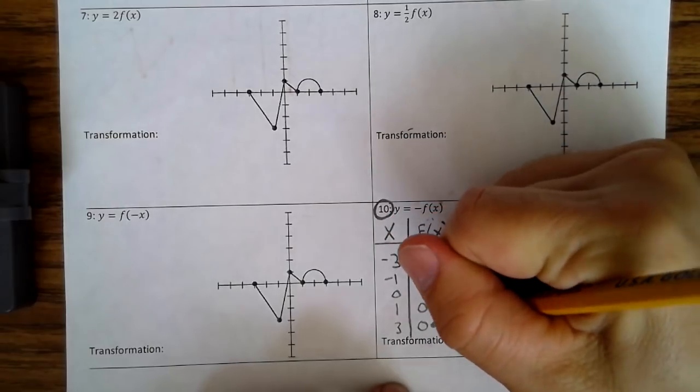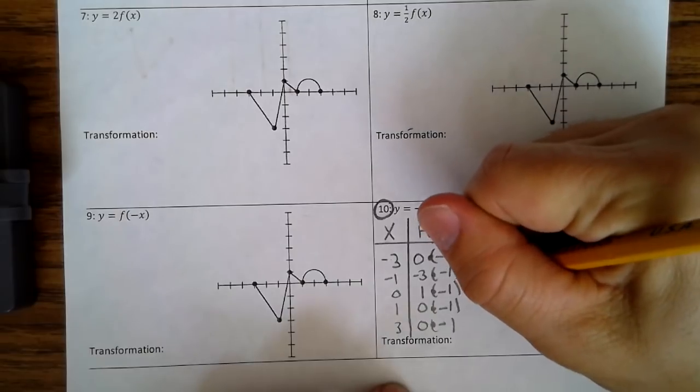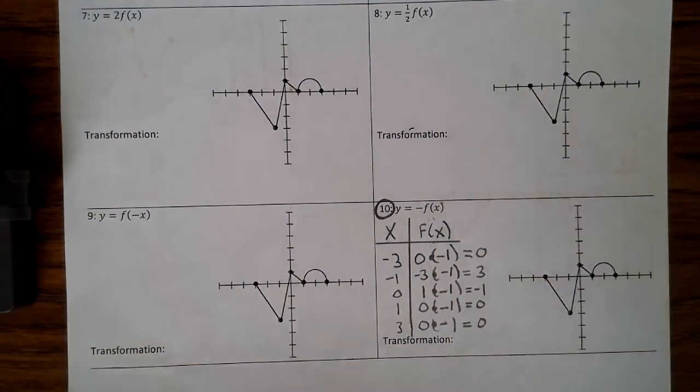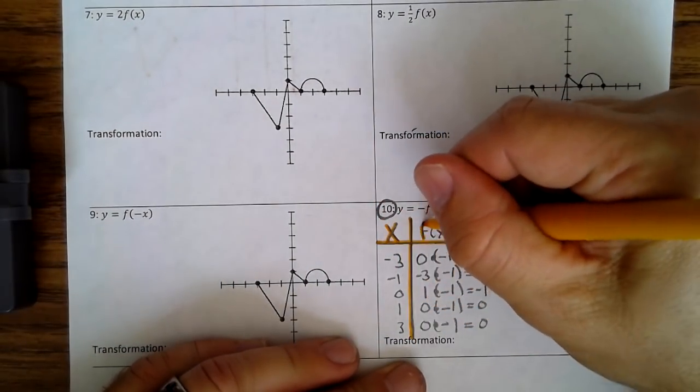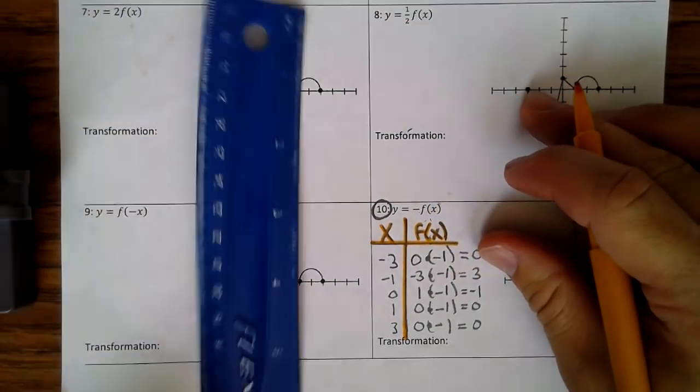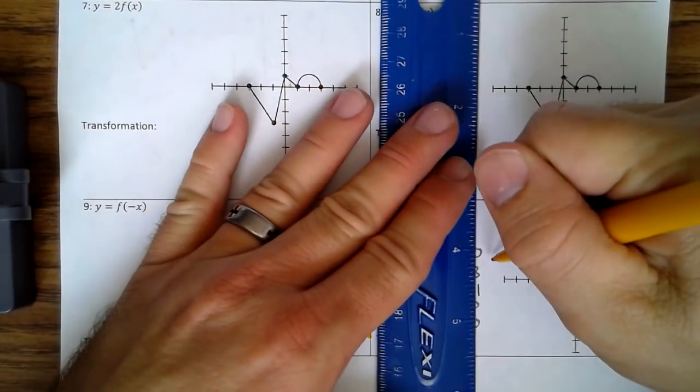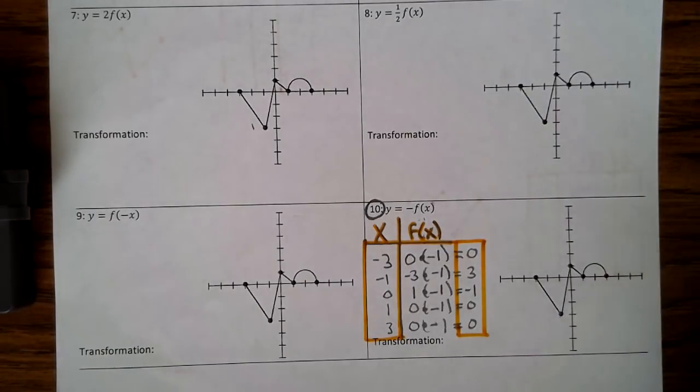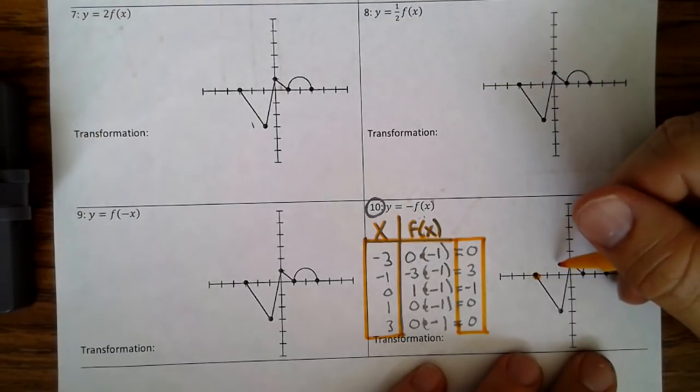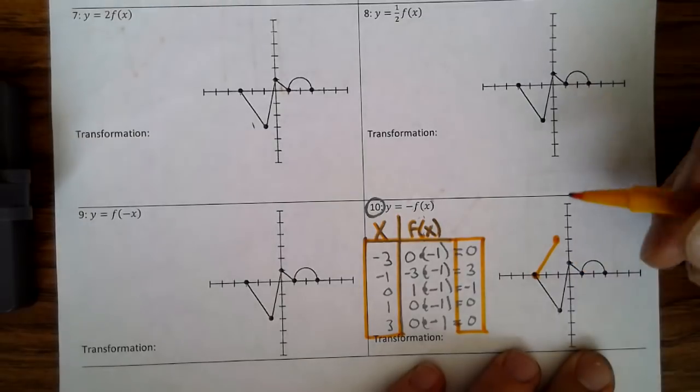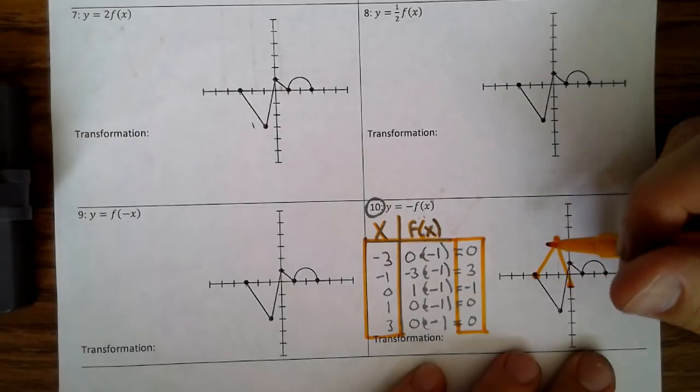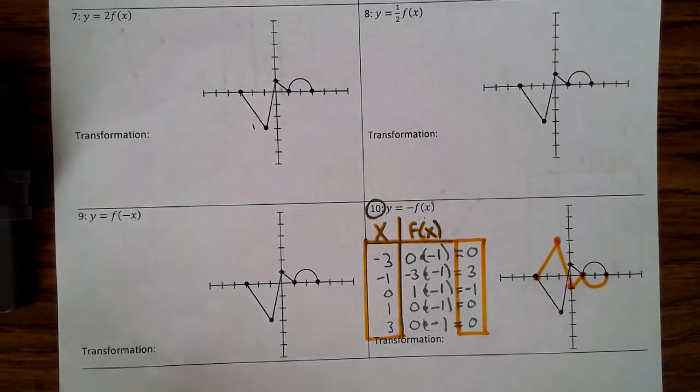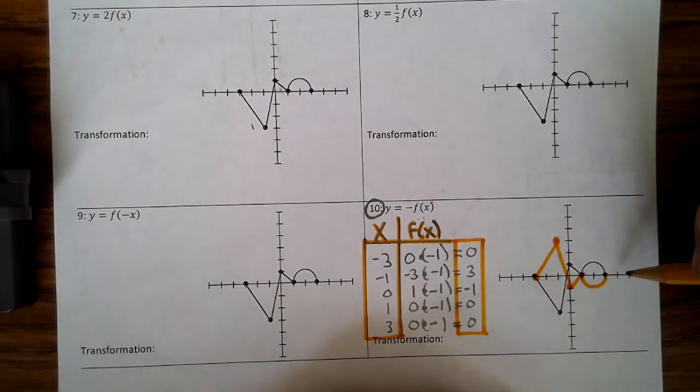And I'm going to use parentheses just so there's no confusion that I'm not subtracting. So, 0 times negative 1 is 0. Negative 3 times negative 1 is a positive 3. 1 times negative 1 is negative 1. That's 0, and that's 0. So, negative 1, 3, 0. Negative 1, 3. And, again, you want to connect as you go. 0, negative 1. 1, 0. And 3, 0. So, you can see here that it reflected across the x-axis.